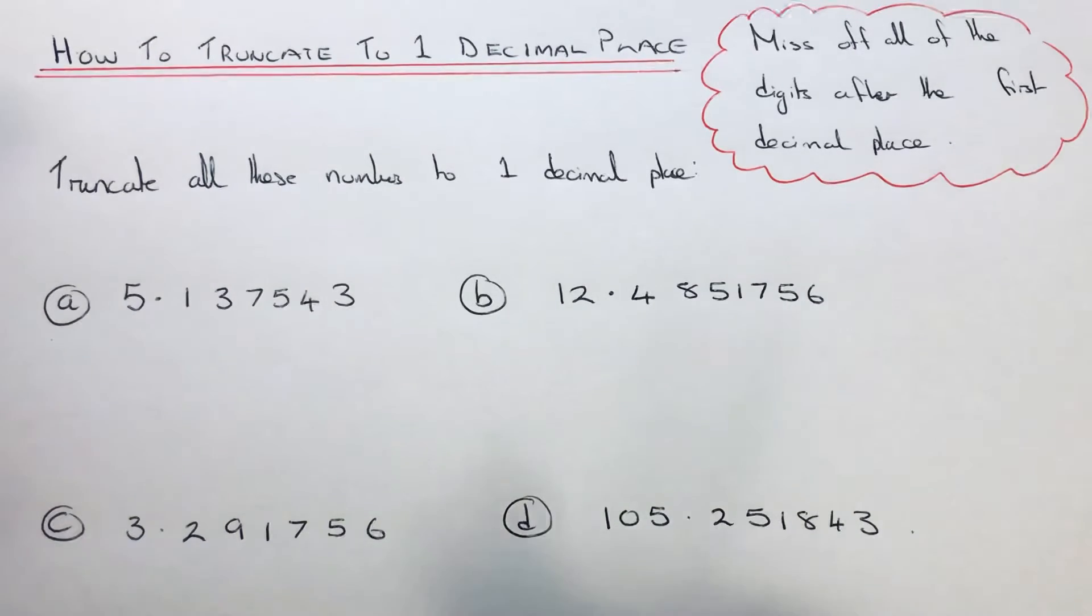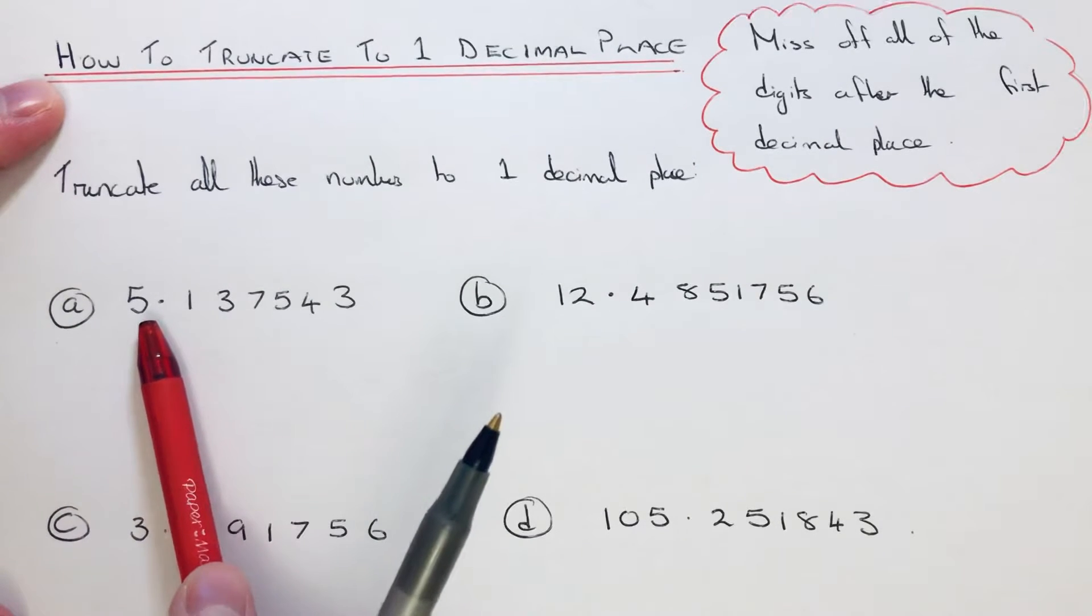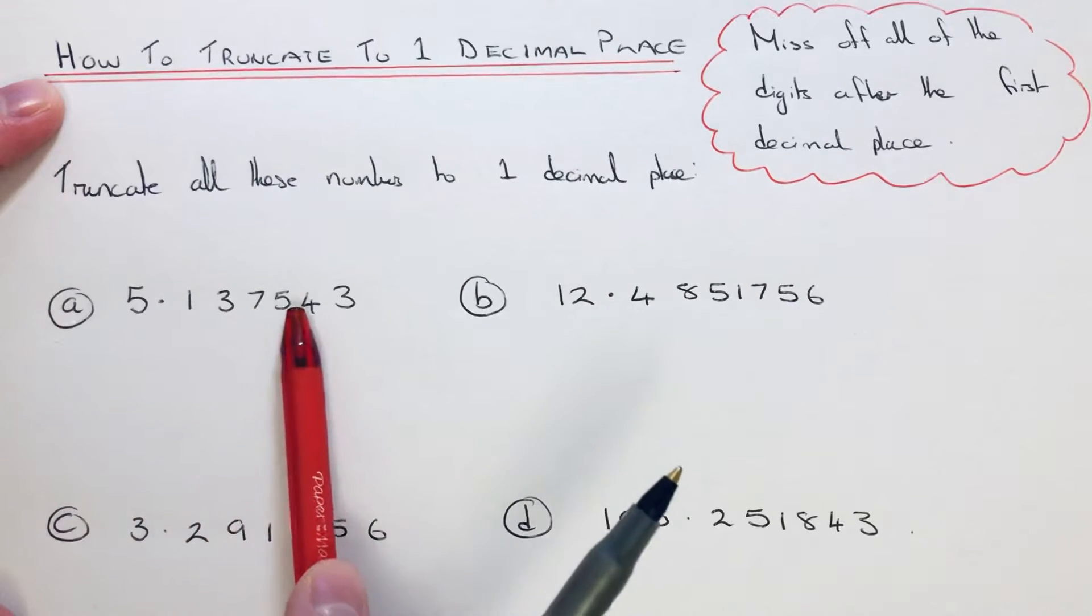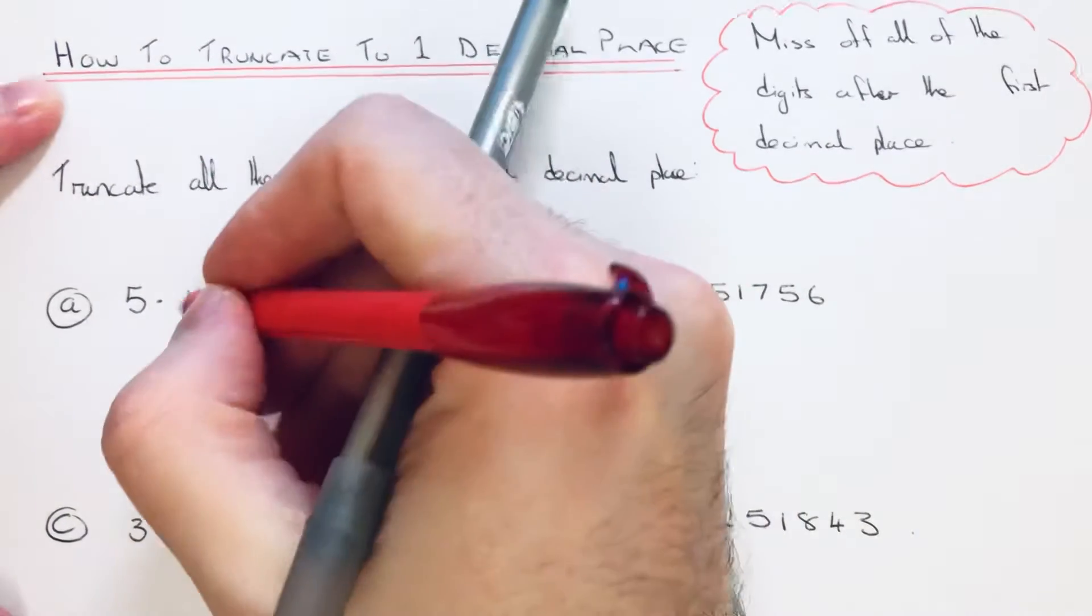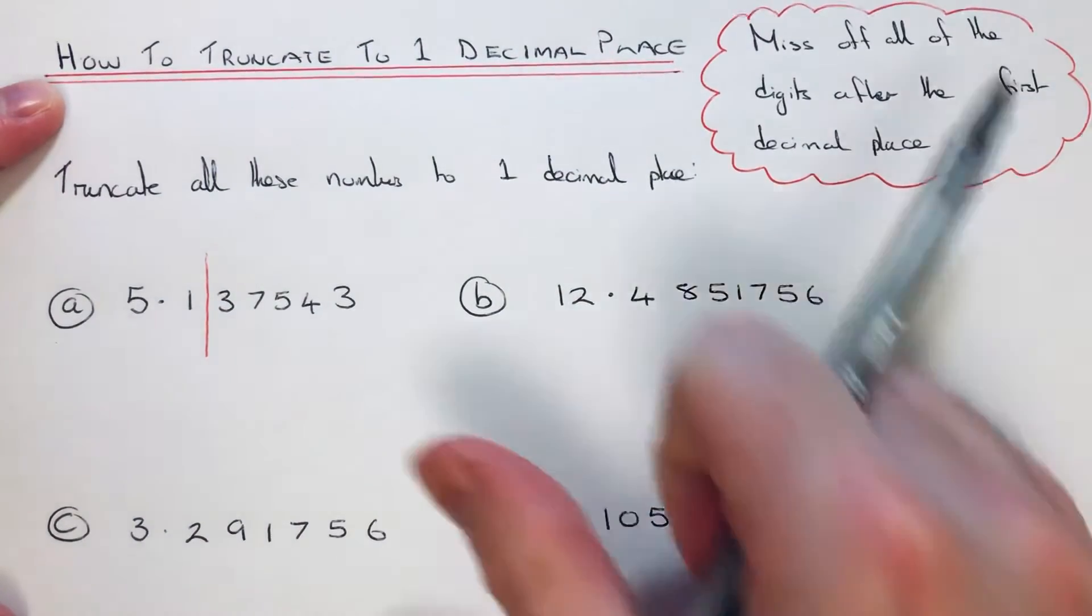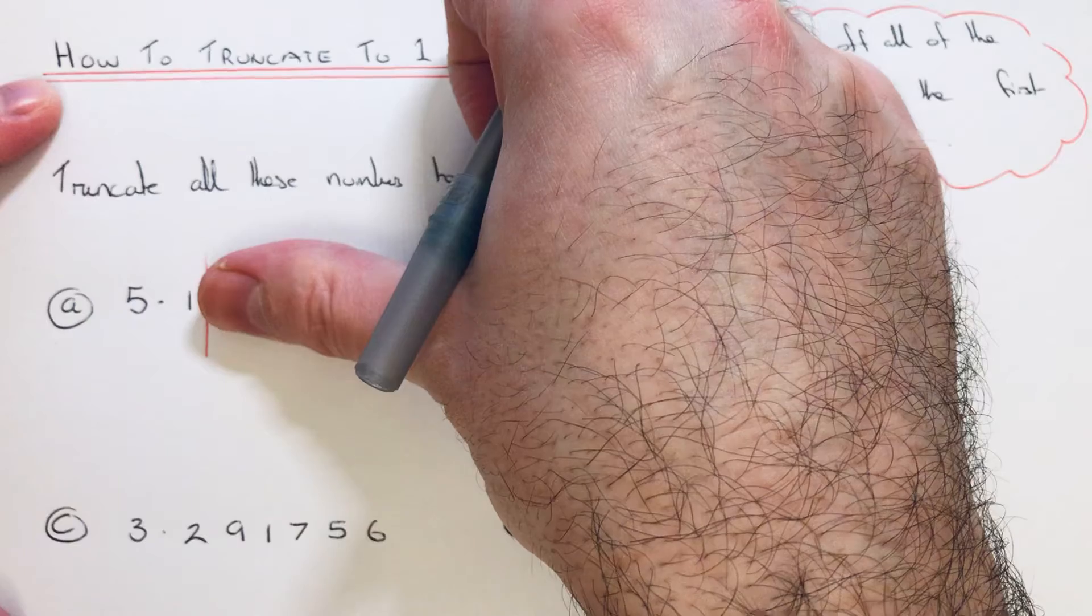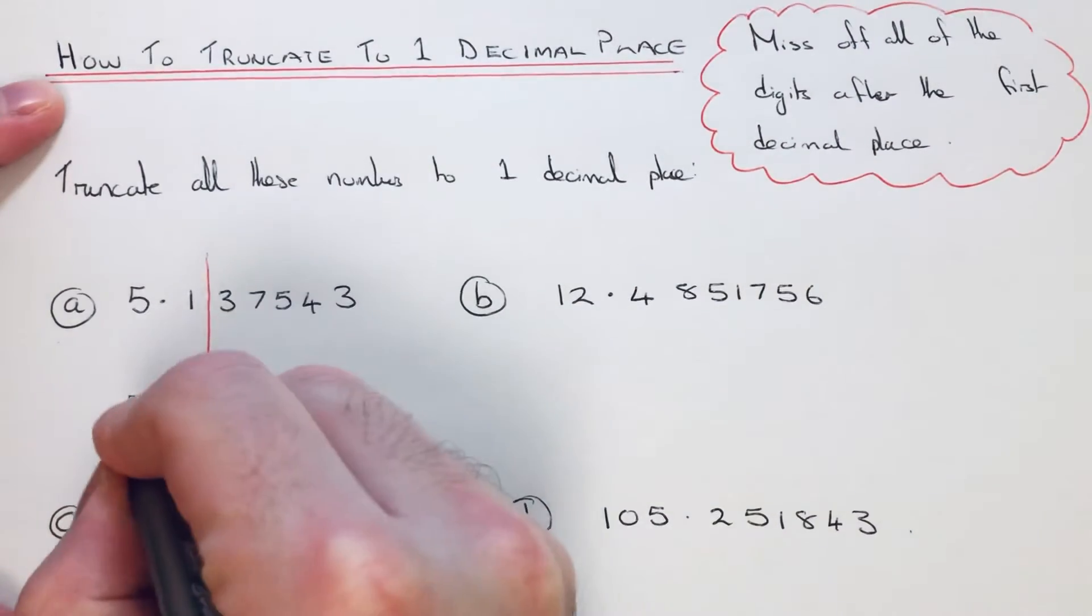Let's look at the examples. The first one we've got to truncate to one decimal place is 5.137543. Our first digit after the decimal is here, so this is where we're cutting the number off. We just need to write down all the digits before that red line, so we're left with 5.1.